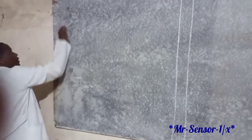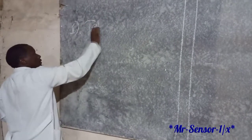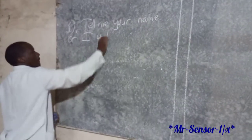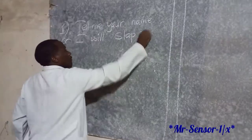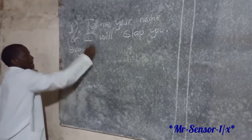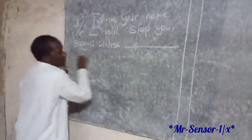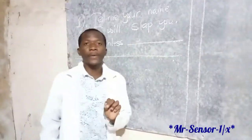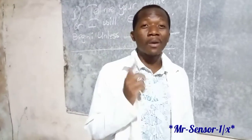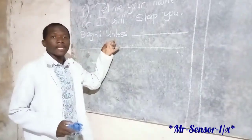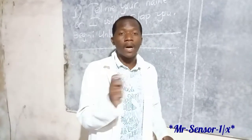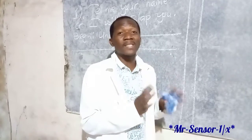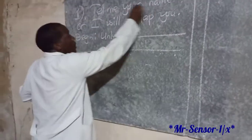Let's say this is question one. The sentence is: 'Tell me your name, or I will slap you.' Then we are told to start with 'unless.' The printed words in a sentence in an exam paper we aren't allowed to change — we are restricted to start with what has been given to us. So in this case, 'tell me your name' is the condition.